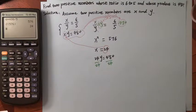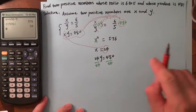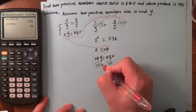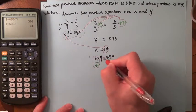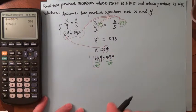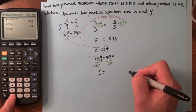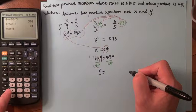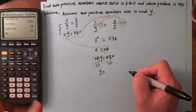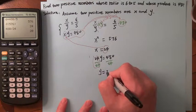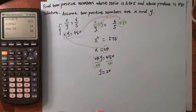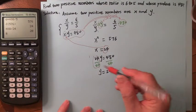24 divided by 24 is 1 times Y, which is Y. The right-hand side is 480 divided by 24, which gives us 20.